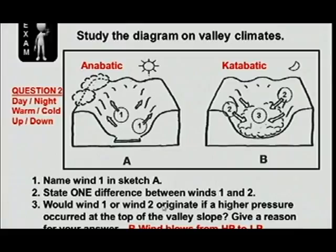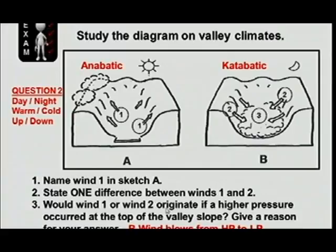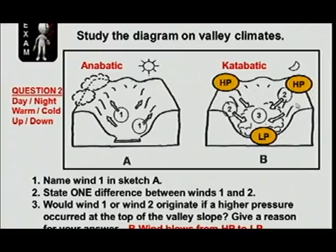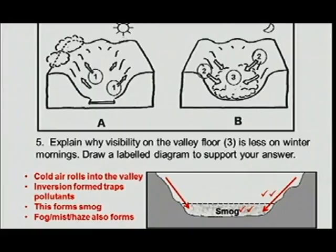Which wind — one or two — would originate if a higher pressure occurred at the top of the valley? Remember what we learned: winds always blow from a high pressure to a low pressure. So if the high pressure is at the top of the valley, the wind blows downward — that gives us wind two, the katabatic wind. The reason is that the wind blows from the high pressure to the low pressure.